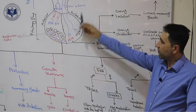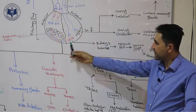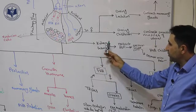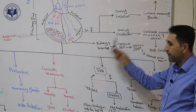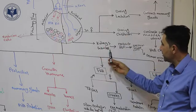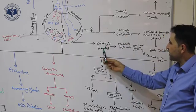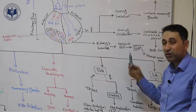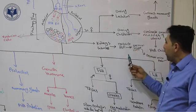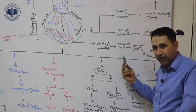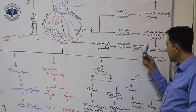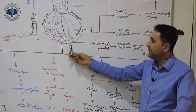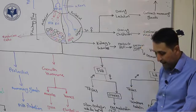Reabsorption of water decreases solute concentration, because water is a solvent — the more solvent, the less concentrated the solutes. ADH is produced by the hypothalamus but released from the posterior lobe. It stimulates kidney tubules to reabsorb water, which decreases solute concentration and decreases urine production — that's why it's named anti-diuretic hormone.